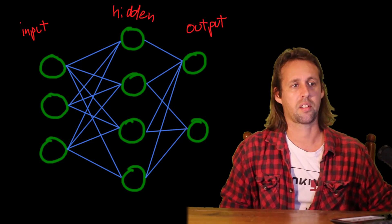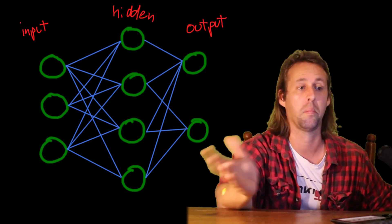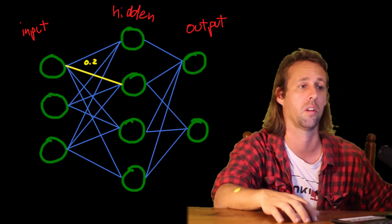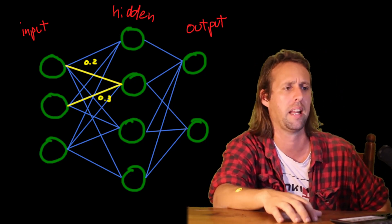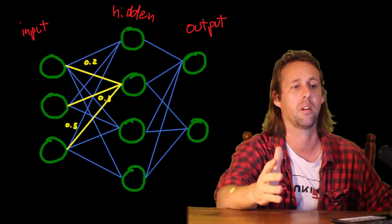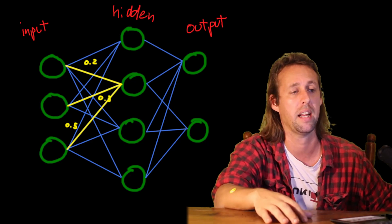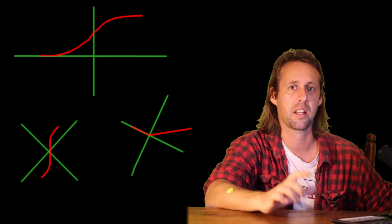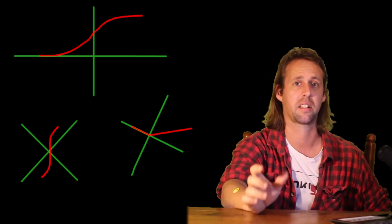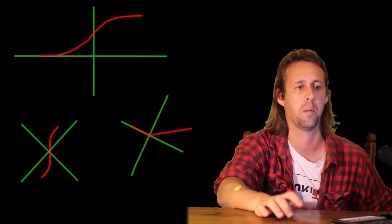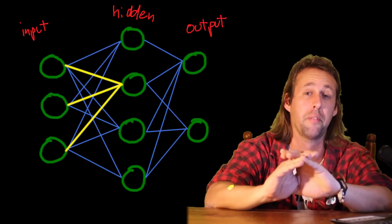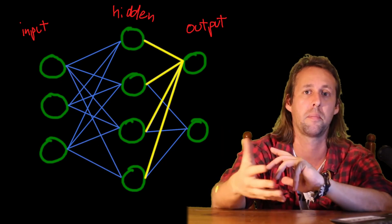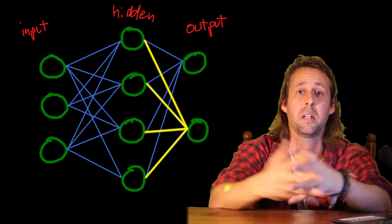The same applies to the second neuron - it has its own set of different weights, maybe 0.2 between it and the first input neuron, 0.3 for the next, and 0.5 for another. The second neuron does its own sum, multiplying weights by input values and computing its own total. There's also a thing called an activation function - some operation we perform on these sums. But basically all that's happening is every neuron in each layer is multiplying all of its weights by the values of the previous layer and accumulating that sum.